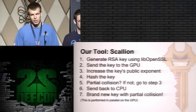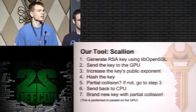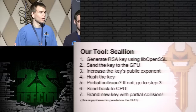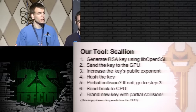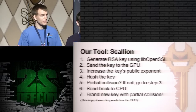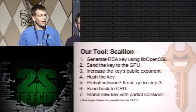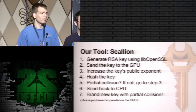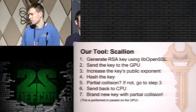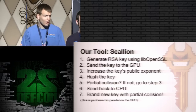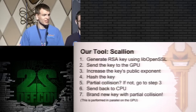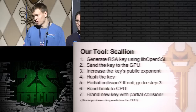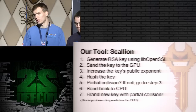In a bit more detail: the first step in generating these GPG keys is we generate an RSA key with libOpenSSL, send the key to the GPU, increase the public key's exponent, and hash the key. Steps three and four we do 500 million times a second. If there's a partial collision, we send it back to the CPU and you have a brand new GPG key with a partial fingerprint collision.